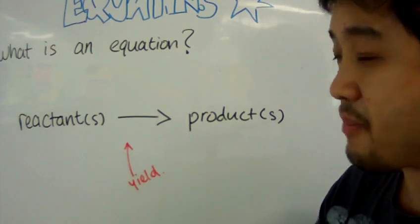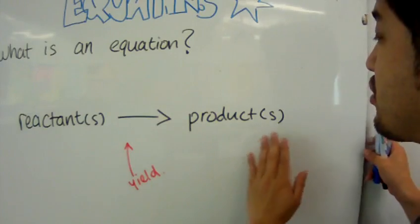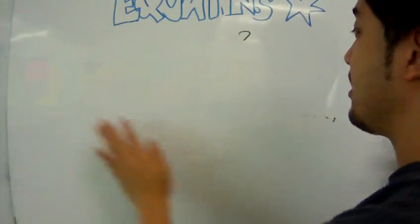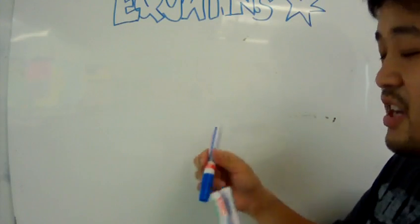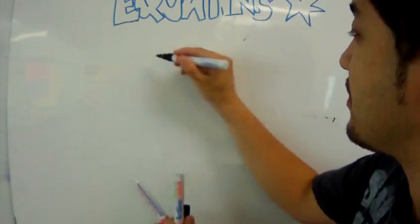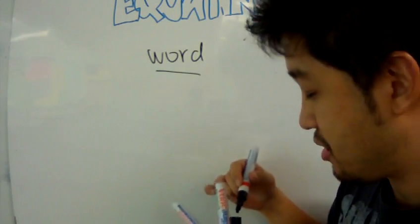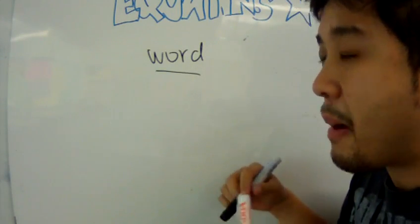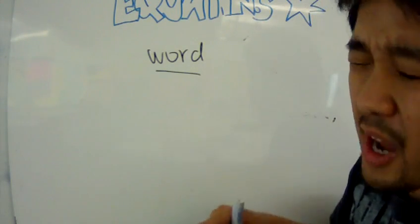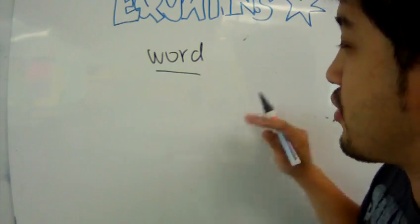And one type of equation that we're going to talk about now, is the word equation. Boom. Now, what's a word equation? Well, a word equation is just a bunch of words, with an arrow, and another bunch of words.